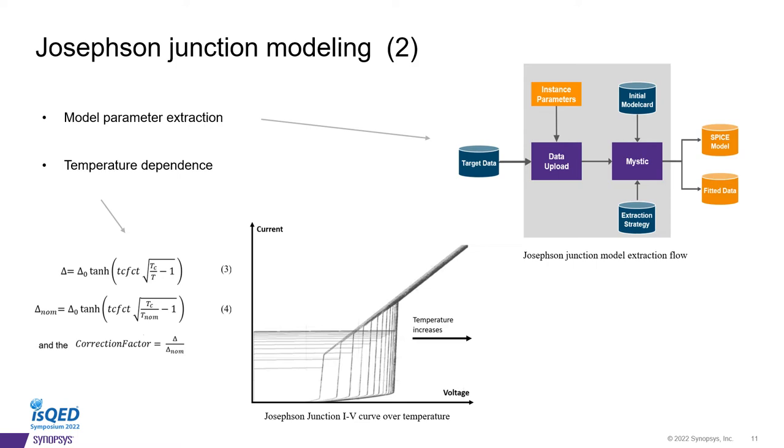On top of the classical RLCSJ model, within the work of this program, we introduce some new effect, which is the temperature dependence. Here is the equation, the relationship for the temperature dependency, which may need to shift the IV curve to the right, which eventually will impact delay over different temperature.